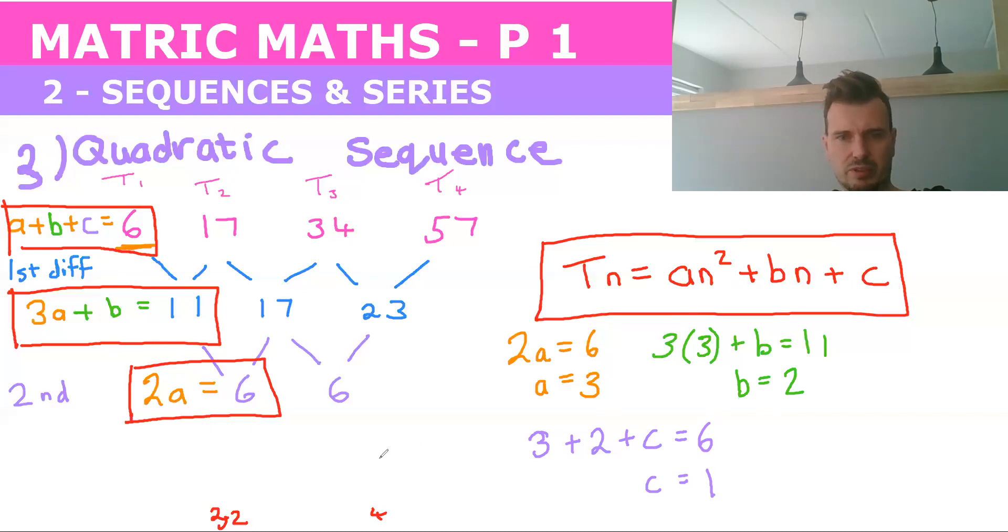And so then we put that into our final formula. So Tn is equal to 3n squared plus 2n plus 1. Obviously, you're not going to write your final answer in all these colors. You'll just say Tn equals 3n squared plus 2n plus 1.